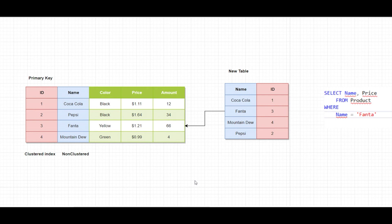If I try to run another query on this table — for example, I want to get the name and the price where name is equal to Fanta — what will happen under the hood is SQL Server will reuse the index I already created, but with a twist: it will try to join the data stored in that index with the original table by the primary key. That's why the primary key is stored with the non-clustered index.